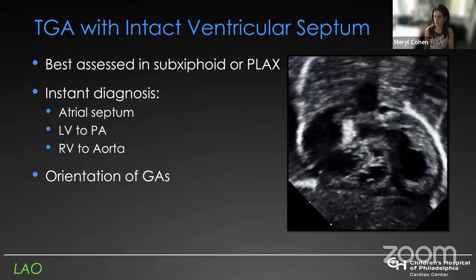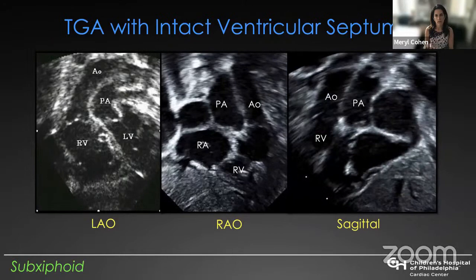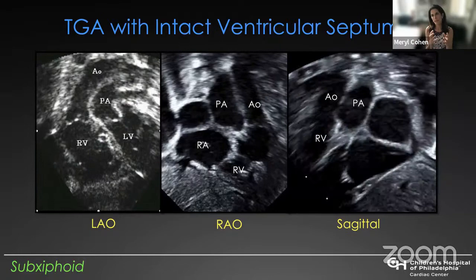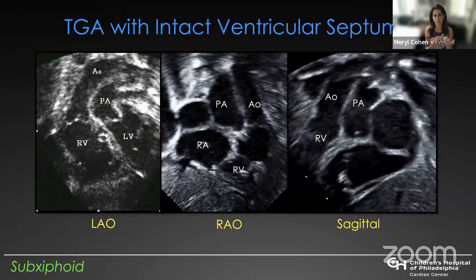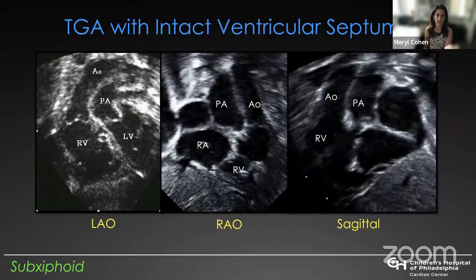When a patient is cyanotic in a nursery, you can make this diagnosis quickly and get going on what you have to do to try to ameliorate the cyanosis. It also helps us understand the orientation of the great arteries. Typically, the aorta is anterior and to the right in transposition, but it can have different orientations. These views can even give you hints about where the coronary arteries are located.